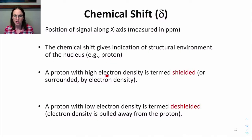A proton with high electron density around it, close to a lot of electron donating groups, is termed shielded, or surrounded by electron density. Shielded protons have signals with chemical shifts closer to 0 ppm.